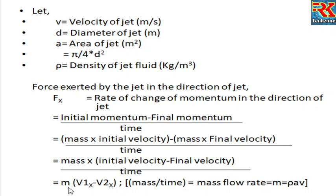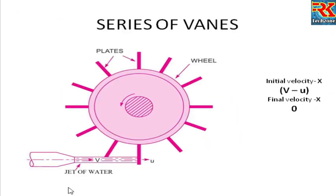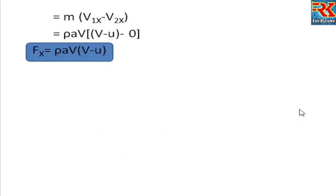Now substituting: v1x equals v-u, and v2x equals 0. So Fx equals m dot into (v1x minus v2x), where m dot is rho A V. Therefore, Fx equals rho A V into (v minus u).